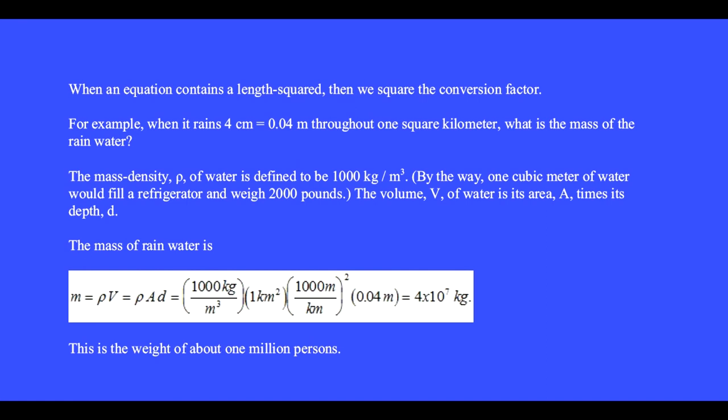The mass density of water is defined to be 1,000 kilograms per cubic meter. By the way, one cubic meter of water would fill a refrigerator and weigh 2,000 pounds. The volume, V, of that water is its area, A, multiplied by its depth, D. The amount of rainwater is mass M equals mass density times volume, but the volume is the area times the depth. So we have density, 1,000 kilograms per cubic meter times area one square kilometer times the conversion factor, 1,000 meters per kilometer, which we have to square because we had kilometers squared here, times depth D equals 0.04 meters equals 4 times 10 to the seventh kilograms, which is the weight of about 1,000,000 persons.